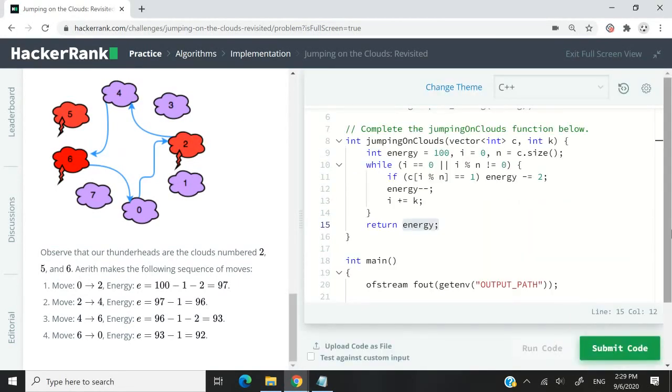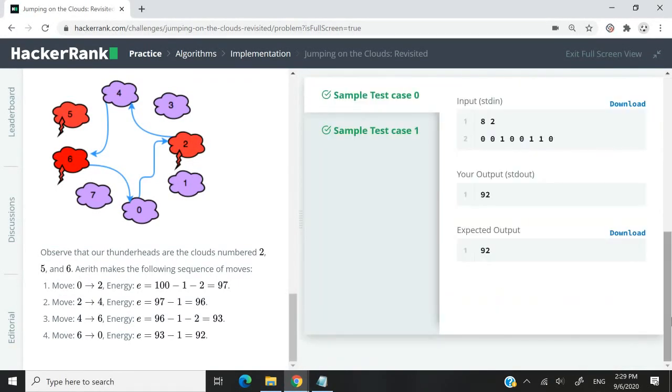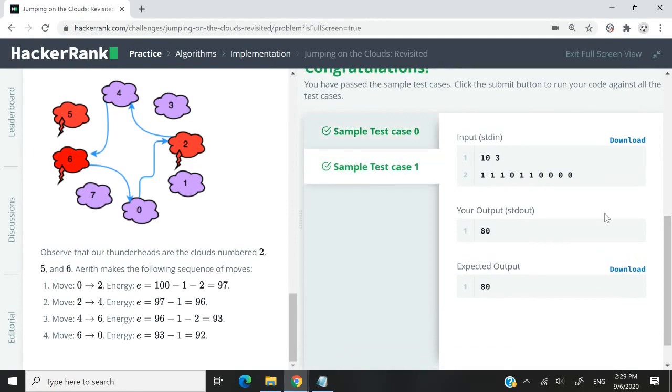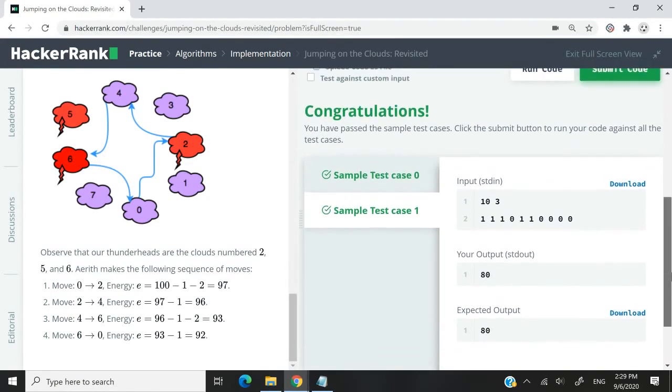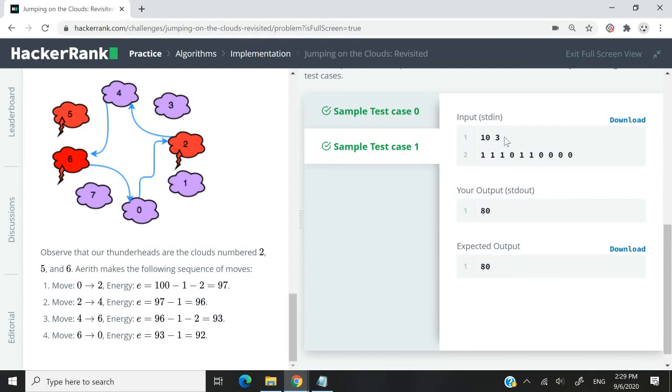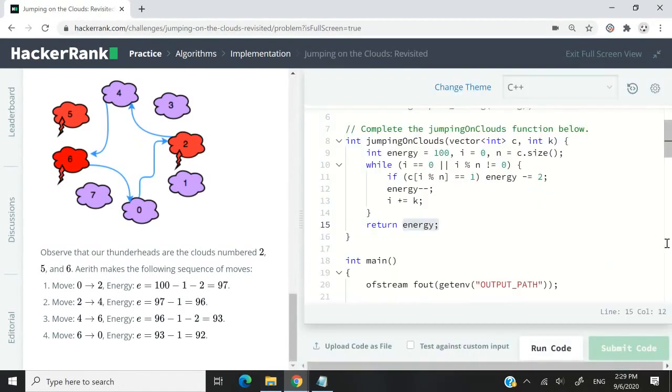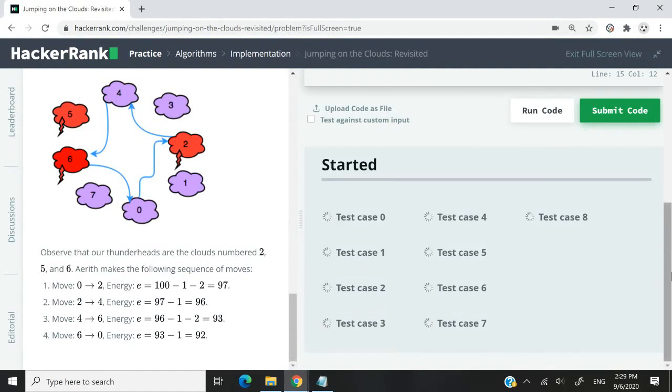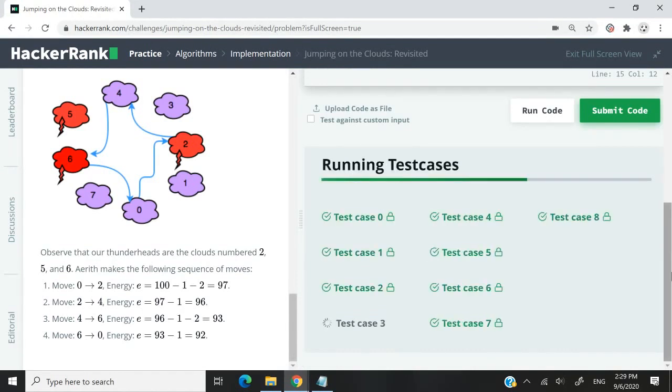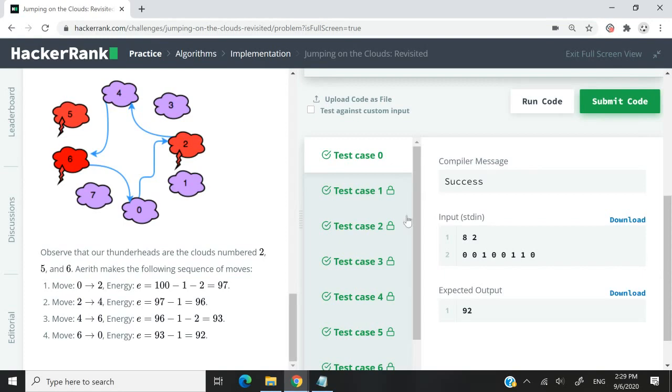I'm going to run this code. We've passed sample test case zero and also sample test case one. So it works for any value of k. It doesn't matter if it's two, three, like if it's an even number or odd number. I'm now going to submit this code. We have nine test cases in all. And we've passed all of them.